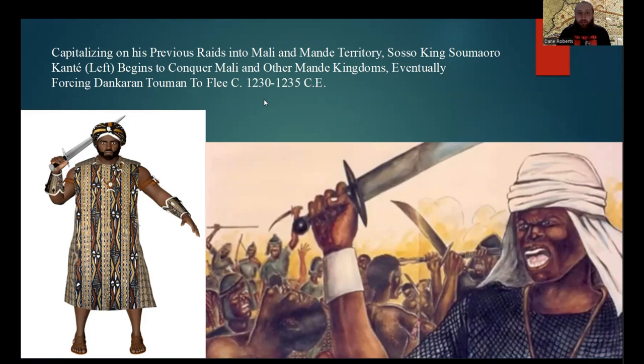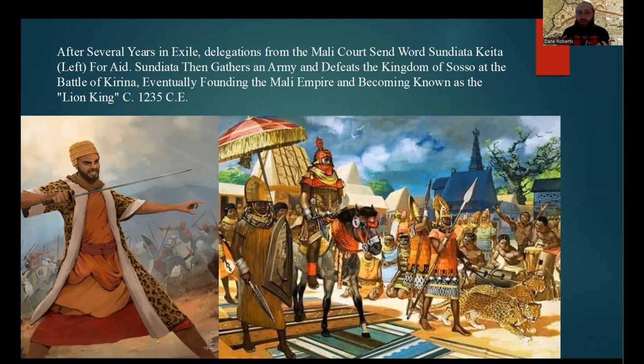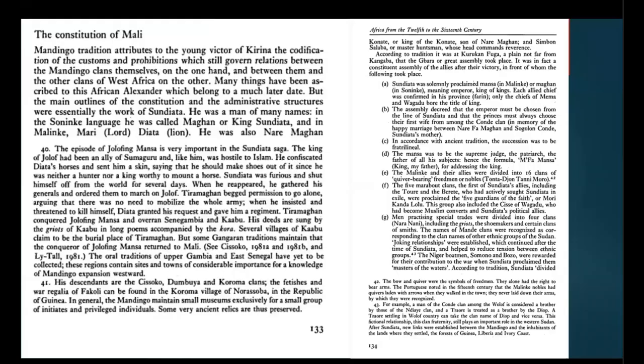All of this happened right around 1230 through 1235 CE. After several years of exile, delegations from the Mali court sent word to Sundiata Keita for aid. Sundiata gathered an army and marched against the kingdom of Soso, where he defeated them at the Battle of Kirina, eventually founding the Mali Empire and becoming known as the Lion King. All of this happened in 1235 CE.